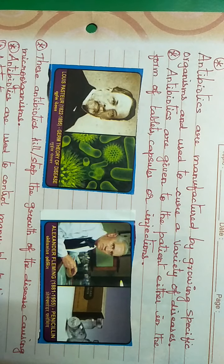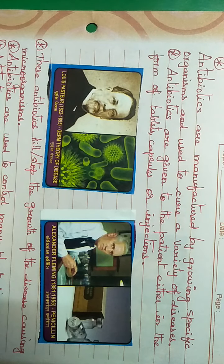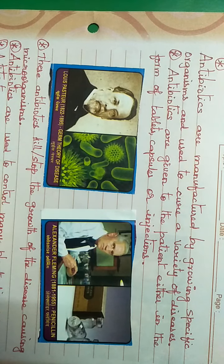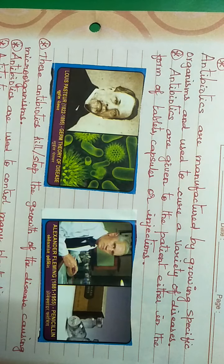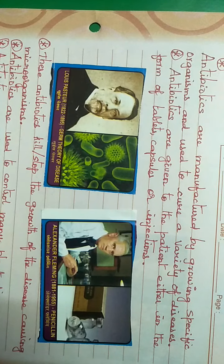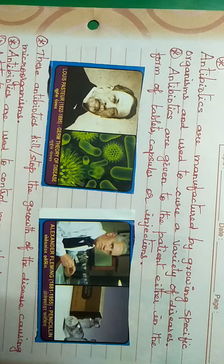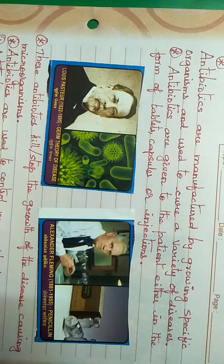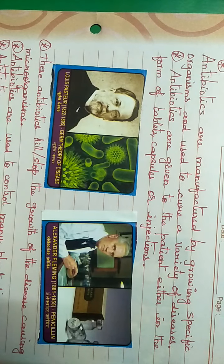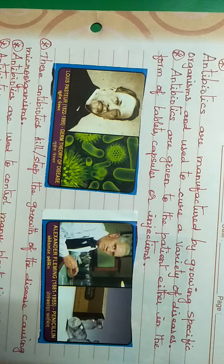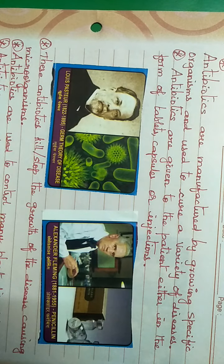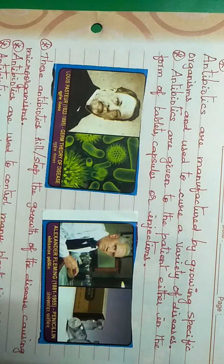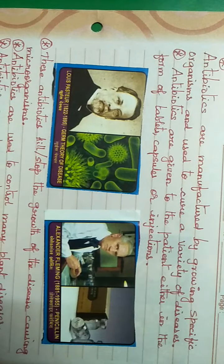Antibiotics are manufactured by growing specific organisms and are used to cure a variety of diseases. They are given to patients in the form of tablets, capsules, or injections. Two notable scientists — Louis Pasteur and Alexander Fleming — developed various antibiotics. These antibiotics kill or stop the growth of disease-causing microorganisms.